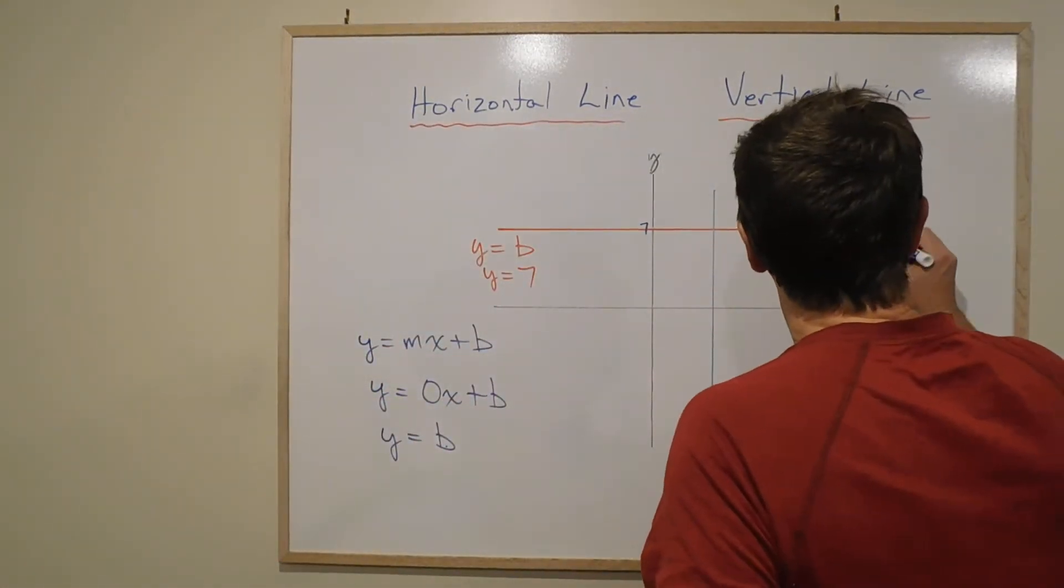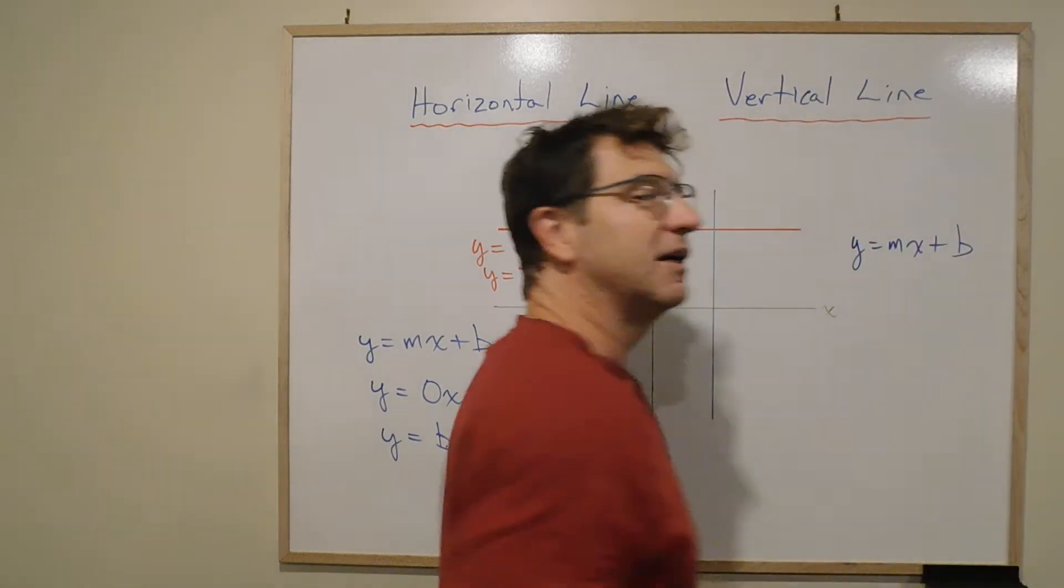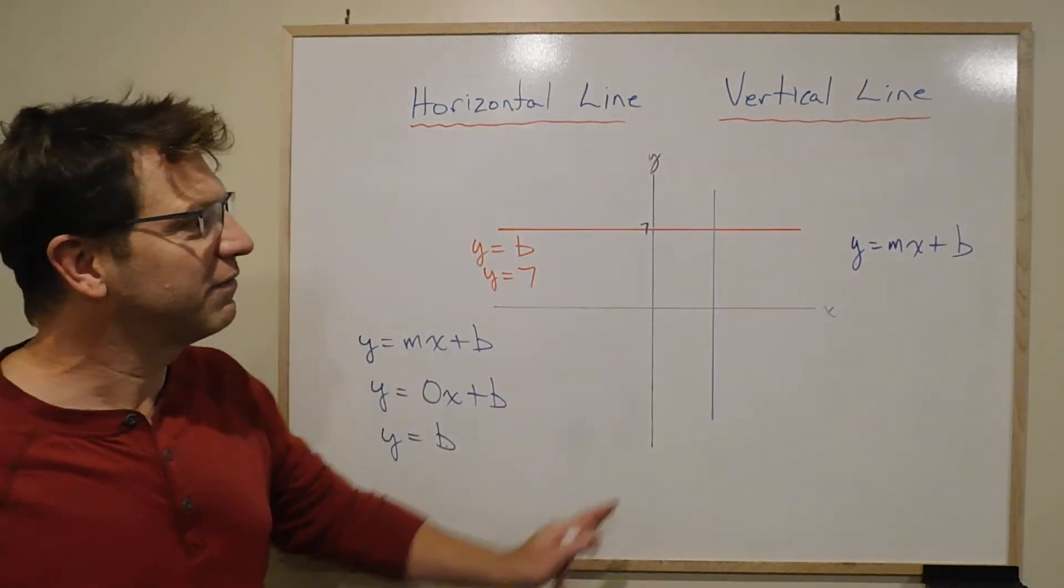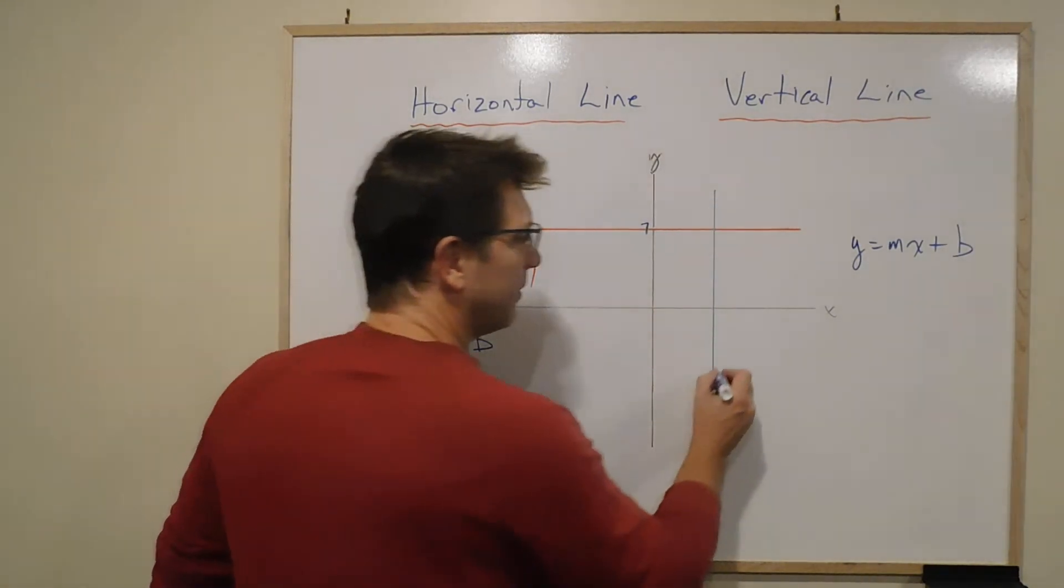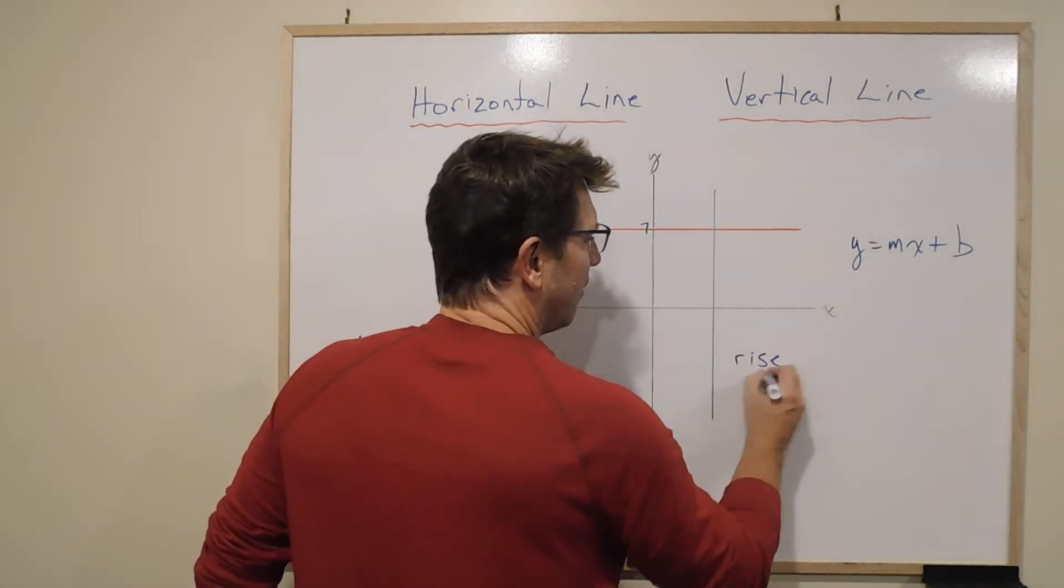y equals mx plus b is where you'd start, but a vertical line has an undefined slope. Remember, slope is rise over run.